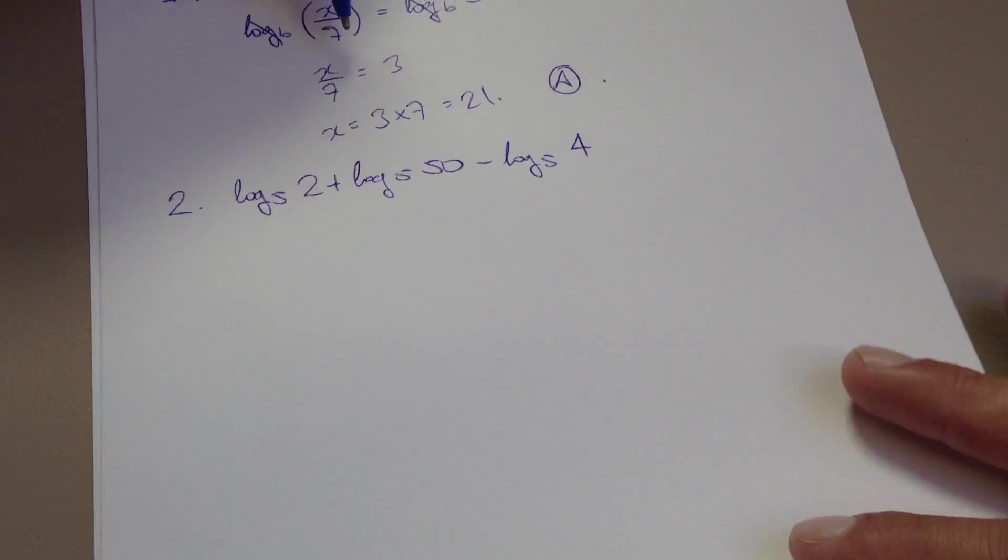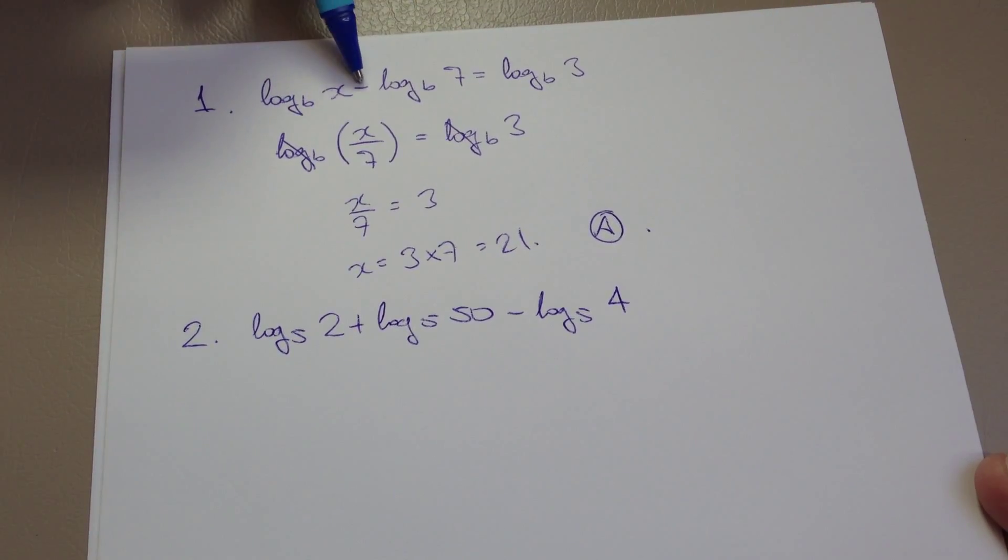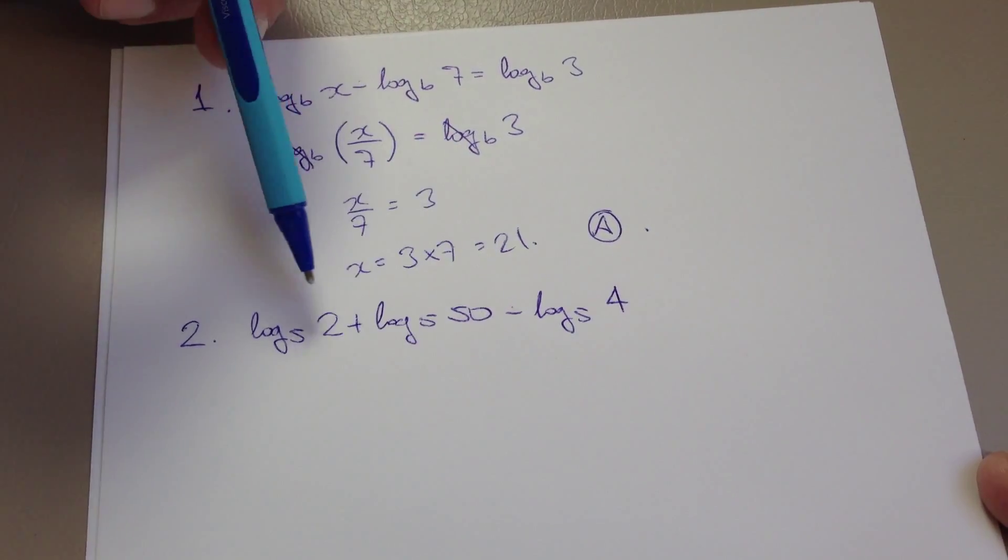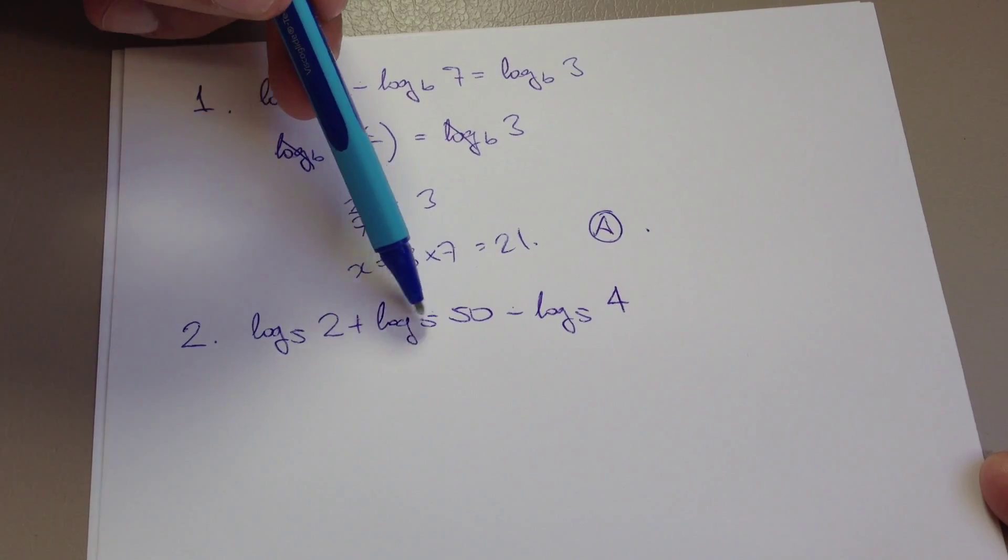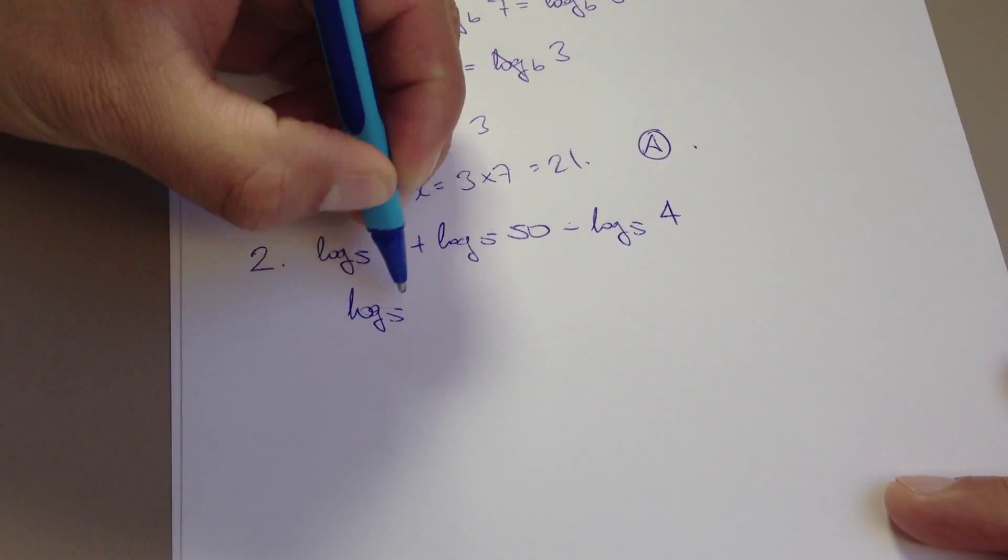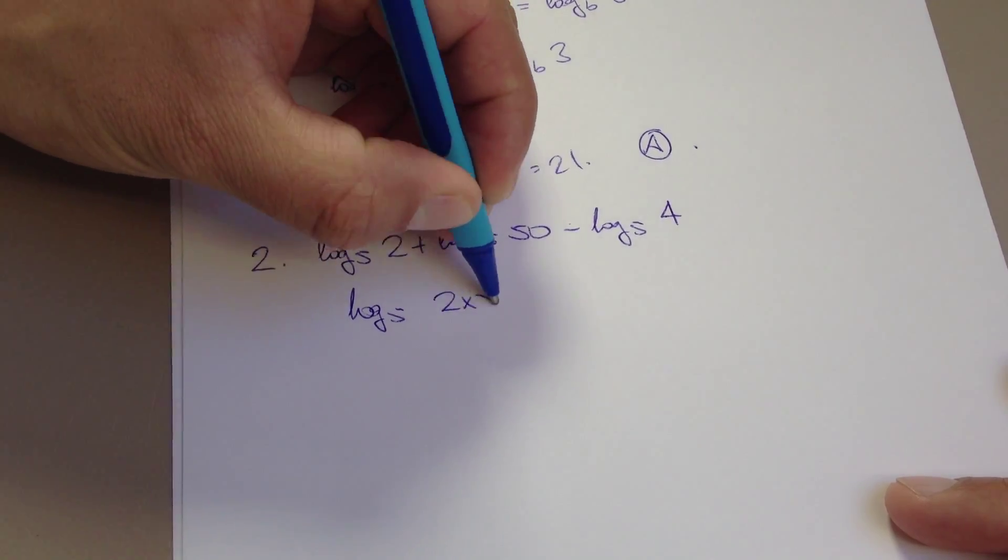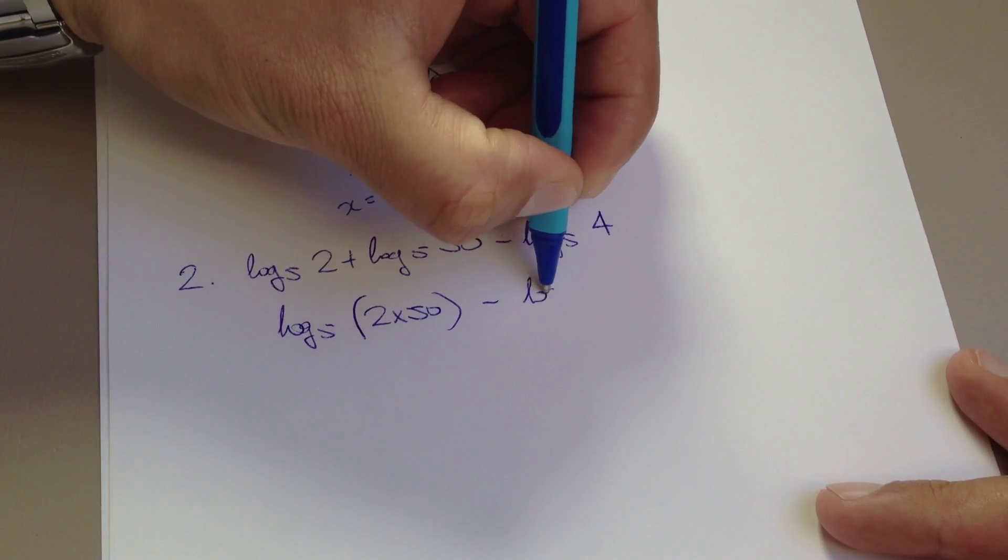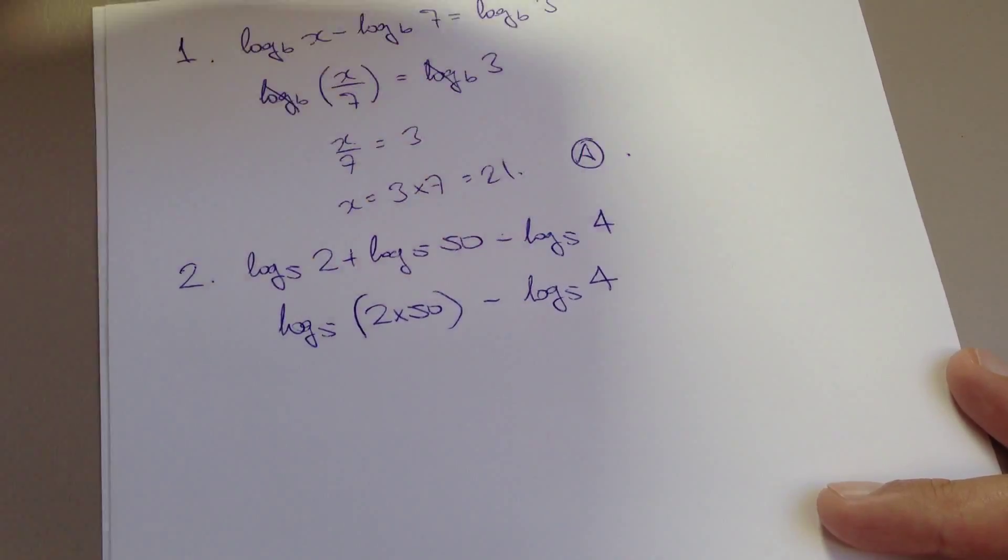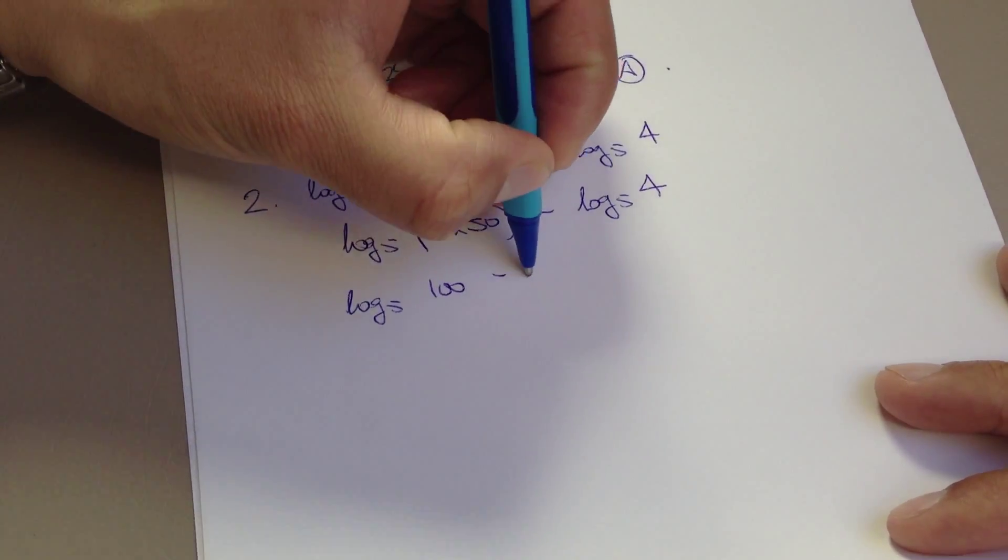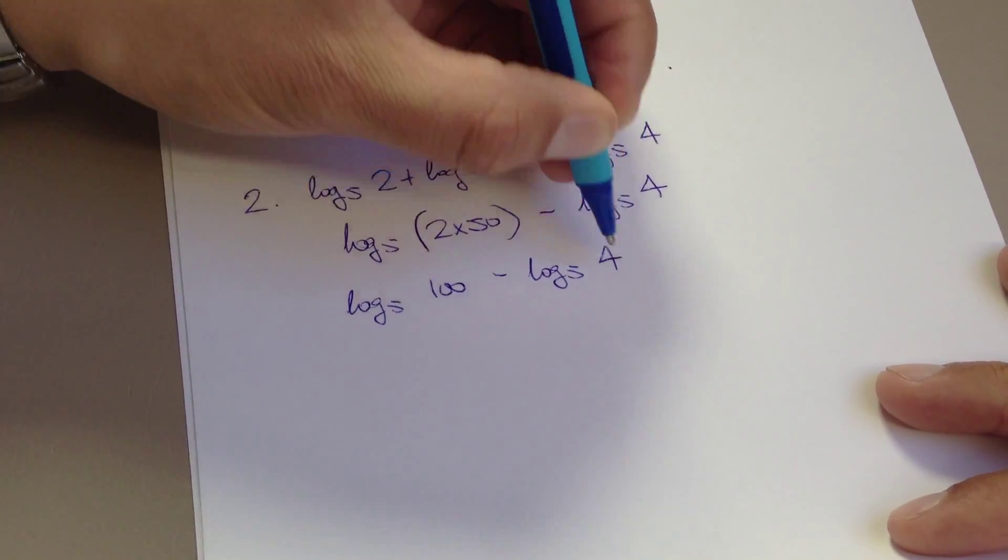Just like previously, where we had subtract, we turned that into a division. We'll be doing the same with this. But because we have a plus here, we'll deal with these two first. So that will simply be log to base 5 of 2 times 50, take away log to the base 5 of 4. And then obviously this is log to base 5 of 100, take away log to base 5 of 4.